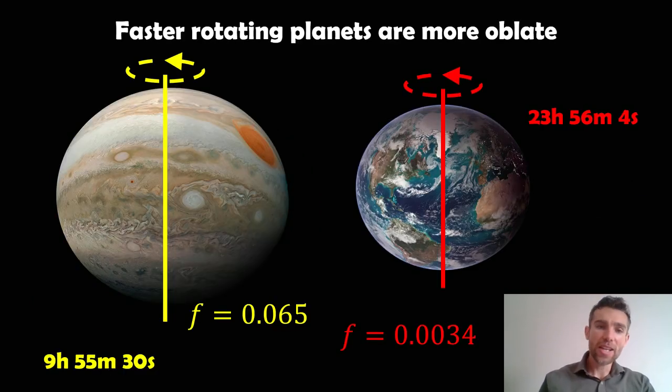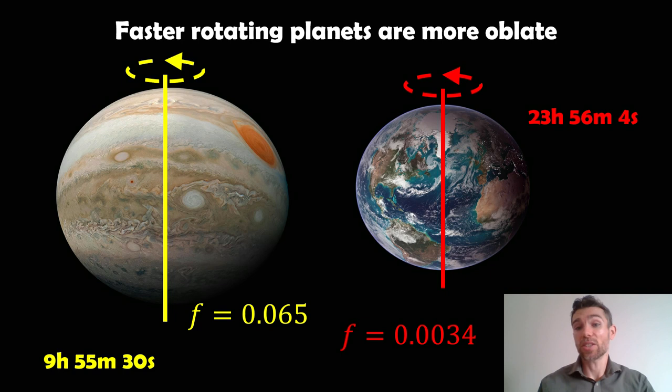Now, the faster you rotate it, the more pronounced that this oblateness is. Yeah, faster rotating planets are flatter, essentially. All stars, all moons. As an example here, Earth rotates just under 24 hours to go round once on its axis. It has an oblateness of 0.0034, or approximately that.